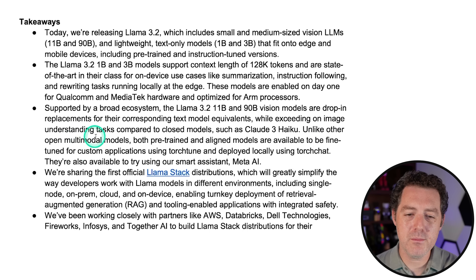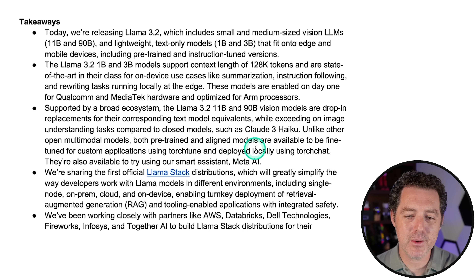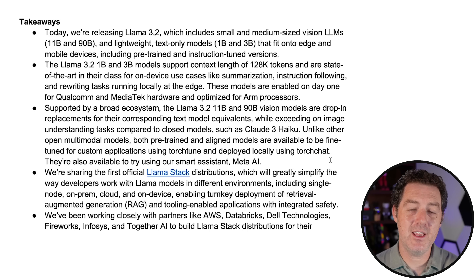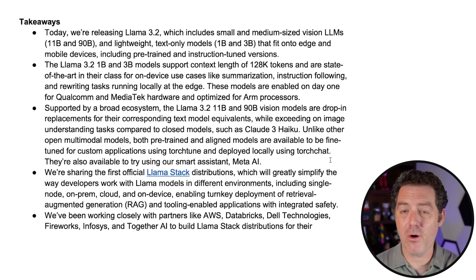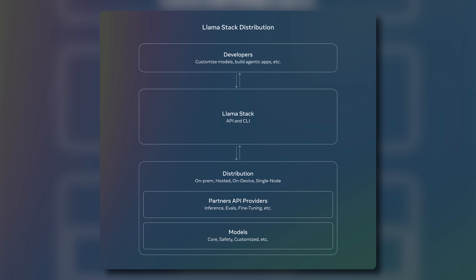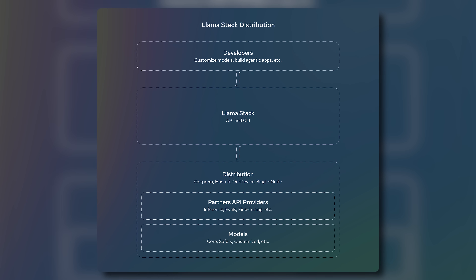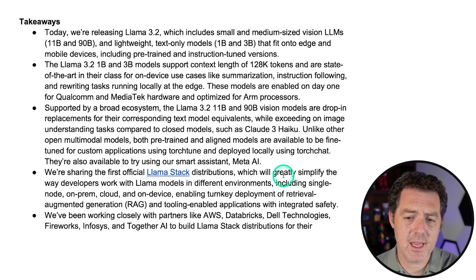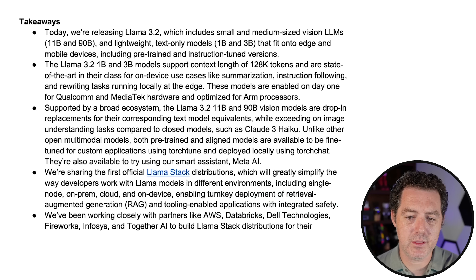Unlike other open multimodal models, both pre-trained and aligned models are available to be fine-tuned for custom applications using TorchTune and deployed locally using TorchChat. They're also available to try using Meta AI. Meta is investing a ton into their ecosystem, building out the tooling to fine-tune and services to host — basically everything you need for an open source model. They're also releasing their first Llama Stack distributions: a set of tools for developers to build everything around the core LLM necessary for production-level applications, enabling turnkey deployment of retrieval augmented generation and tooling-enabled applications with integrated safety.